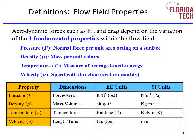Next is density. Density of air is the mass per unit volume. High density flow implies closely compacted air molecules. Density on a standard day is 0.002377 slugs per cubic foot. Next, temperature. Temperature is a measure of the average kinetic energy of the air molecules. A high temperature flow implies that the air molecules are moving randomly at relatively high speeds. In aerodynamics, an absolute temperature scale is typically used. Absolute zero is the temperature at which the molecules would have zero kinetic energy. On a standard day, temperature is 59 degrees Fahrenheit or 519 degrees Rankine.